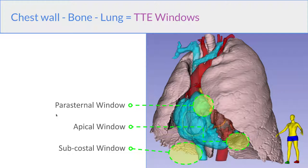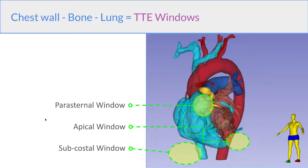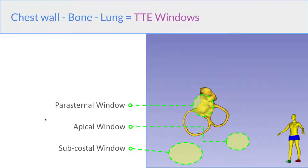As we take the ribs away, you can see how those windows correspond to the cardiac structures underneath. So the parasternal window overlies the right ventricular outflow tract. The subcostal window looks from beneath the RV, and the apical window looks at the apex. You can see that the parasternal window also looks directly down at the aortic valve, whereas the apical window looks up towards the aortic valve along its long axis.